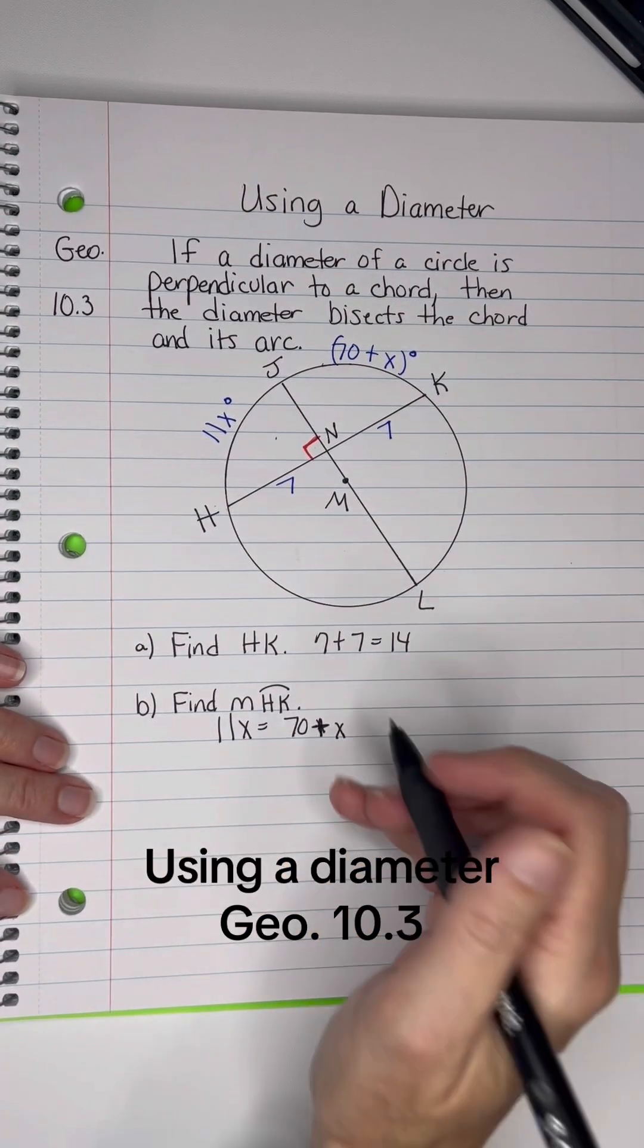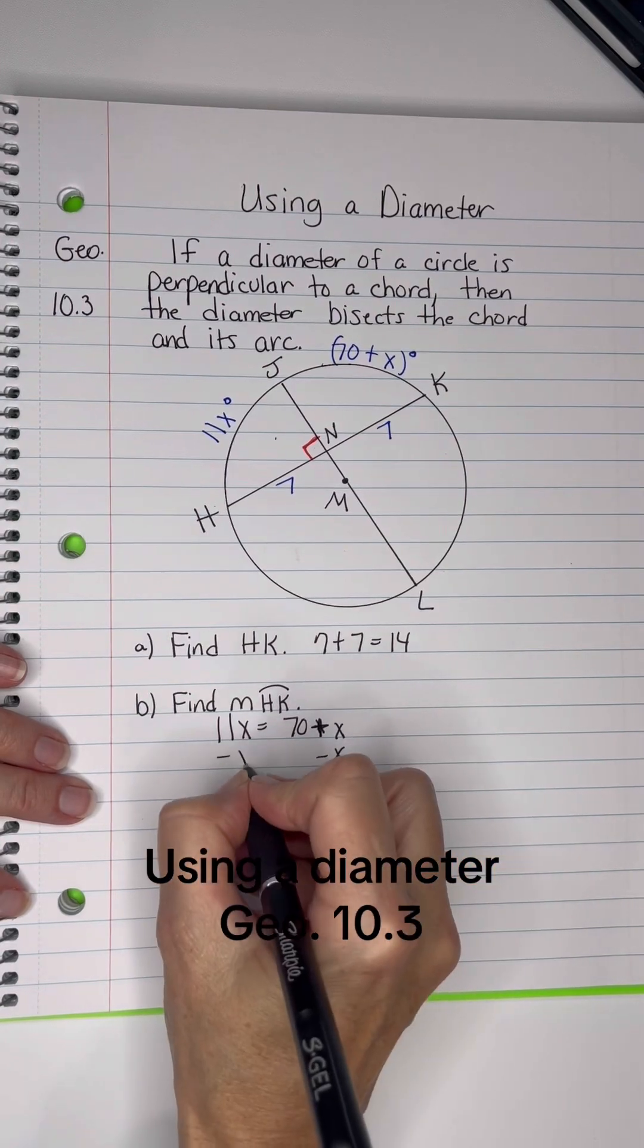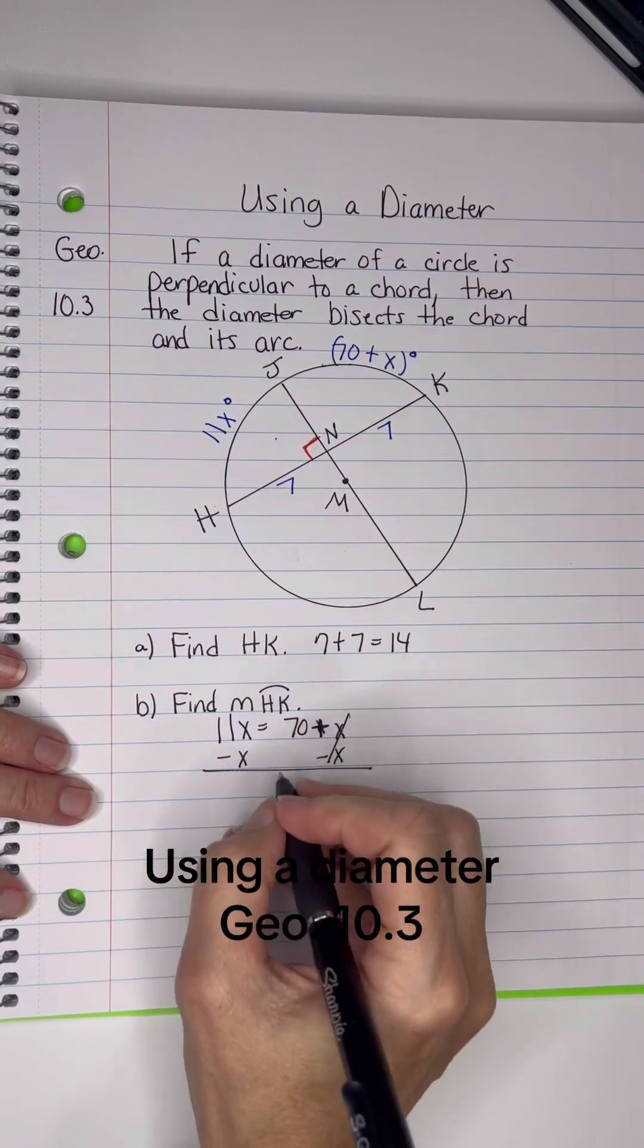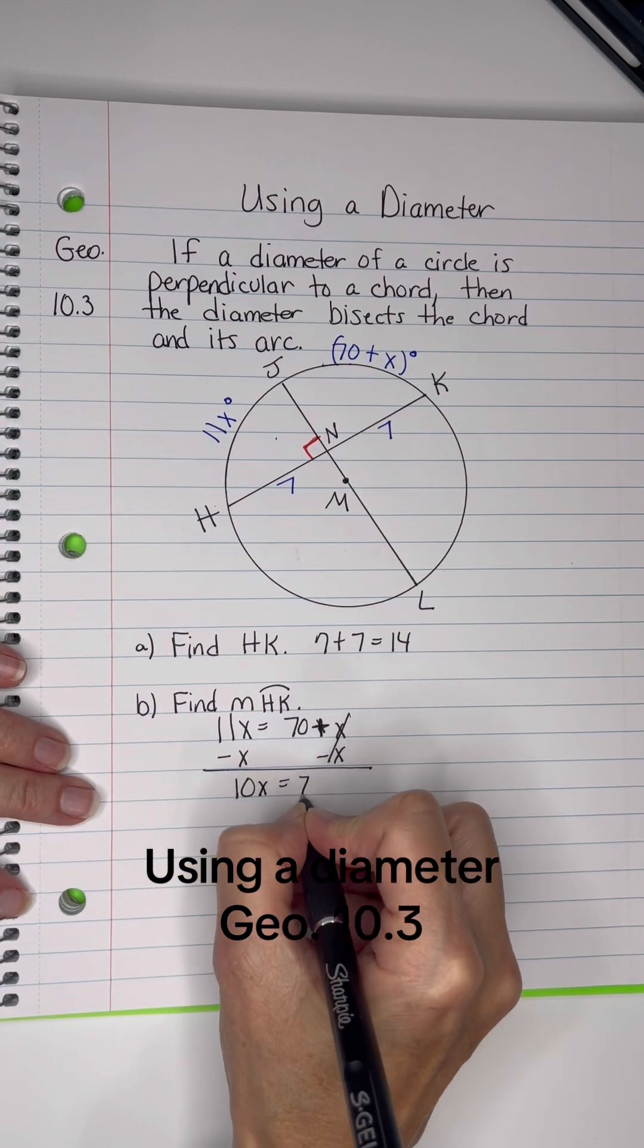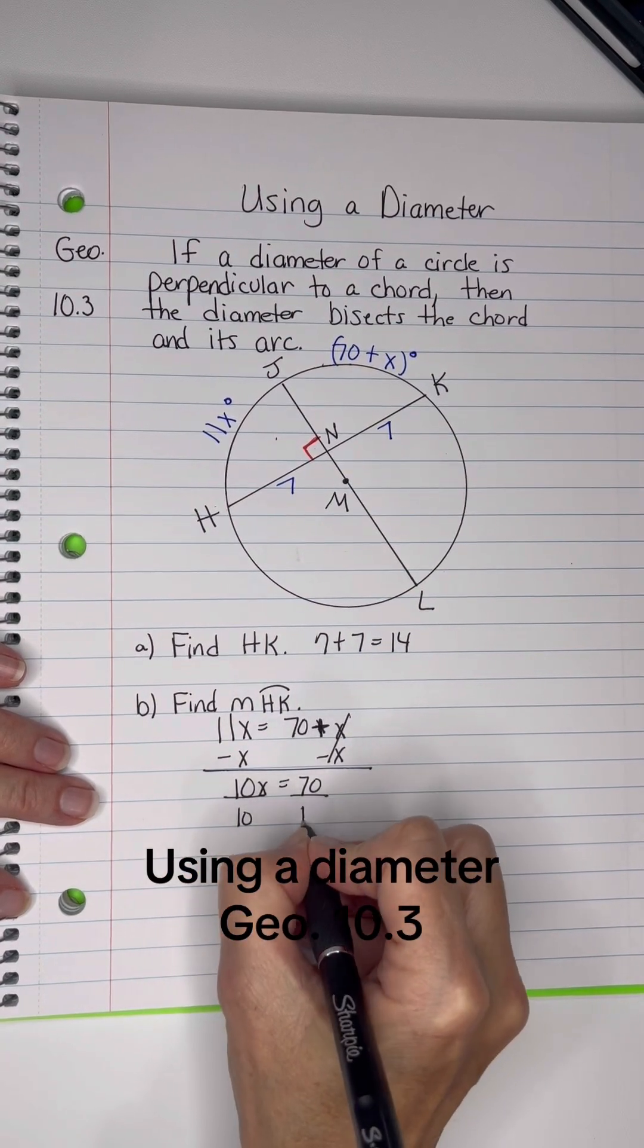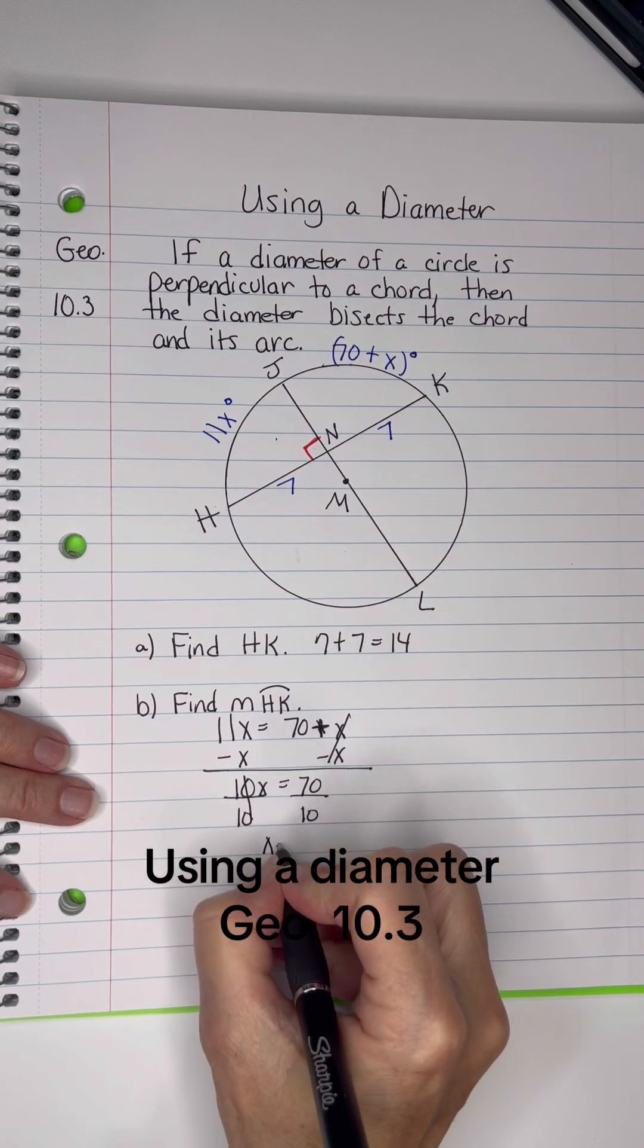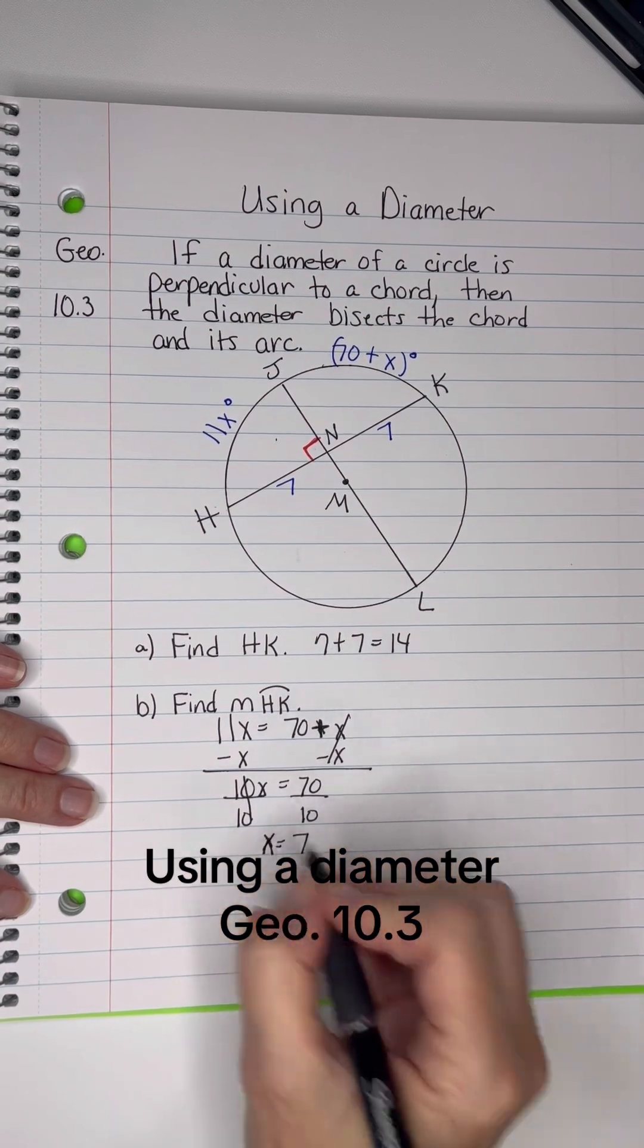To get the x's on the same side, let's subtract x from both sides. We have 11x minus 1x, which is 10x equals 70. Divide by 10, x equals 7.